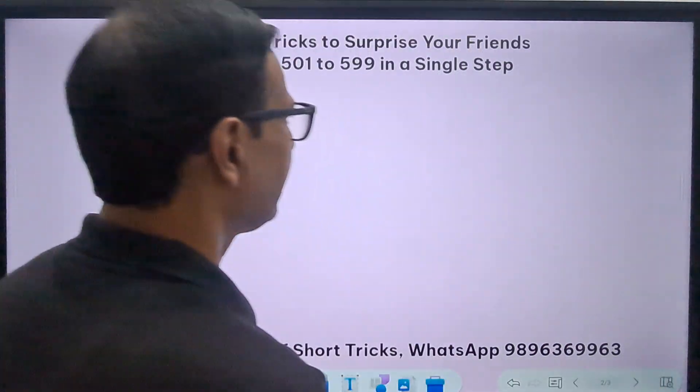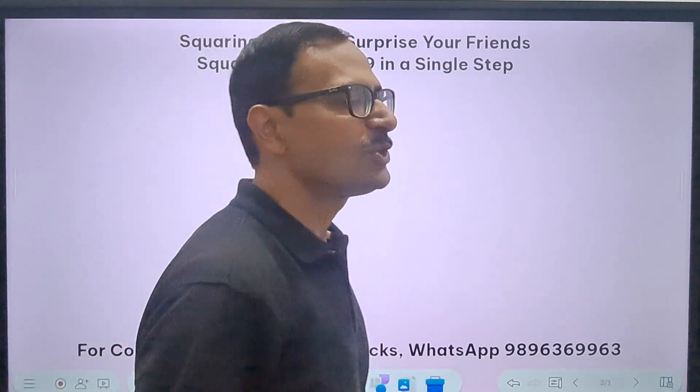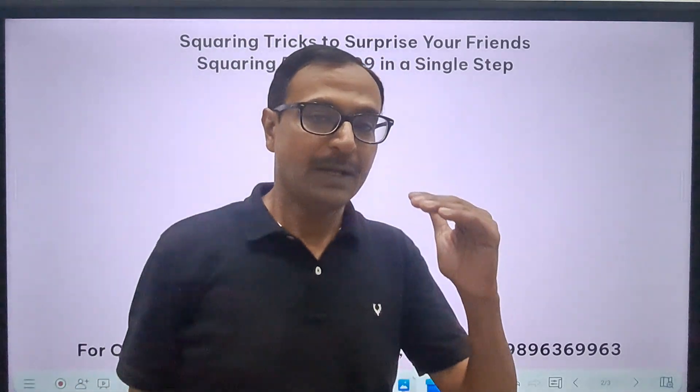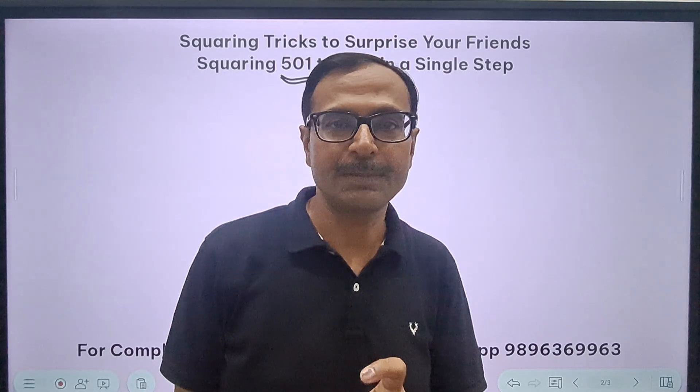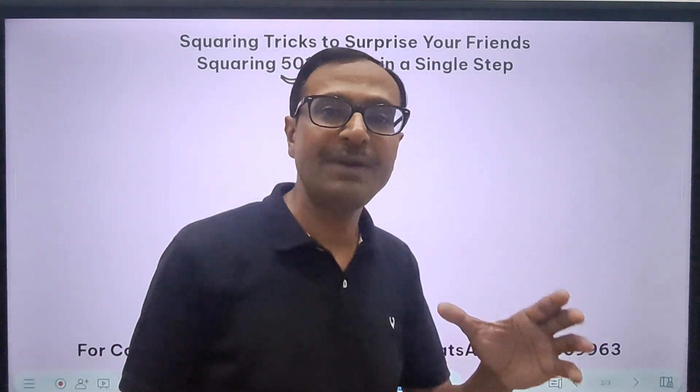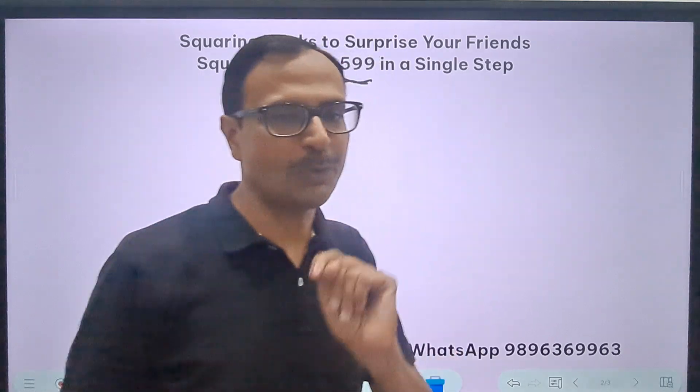All these squares can be found out really very quickly, and I'm sure if you know the method you'll feel more confident. Let's move on and now take up numbers from 501 to 599. In the first question you'll see that I consume maybe one minute or one and a half minutes to explain the concept to you. But in the last question which I'll take up, I'll do it virtually in a maybe single line.